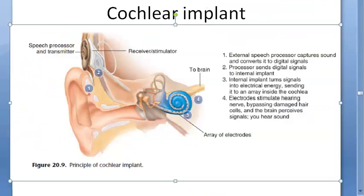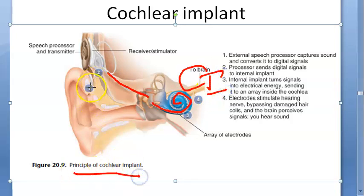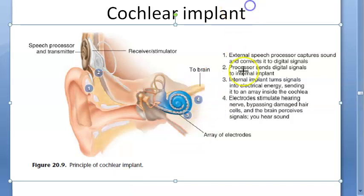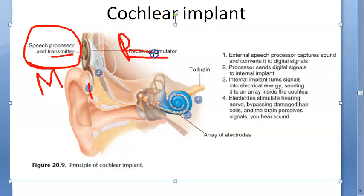The cochlear implant is placed directly in the inner ear - in the cochlea. In the spiral structure, you are putting something. This is the cochlear implant. Look at the principle: one - external speech processor, which has a microphone and standard things, and it will transmit inside. Inside you have a receiver. The processor sends digital signals to the internal implant.